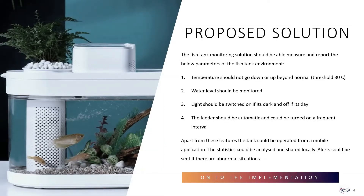The proposed solution is a fish tank monitoring system using an Arduino and a Raspberry Pi. It monitors temperature and if it's abnormal — say above 30 degrees — an LED blinks or a notification is sent. Water level monitoring works similarly: if it's not optimal, a notification is sent or the LEDs start blinking.